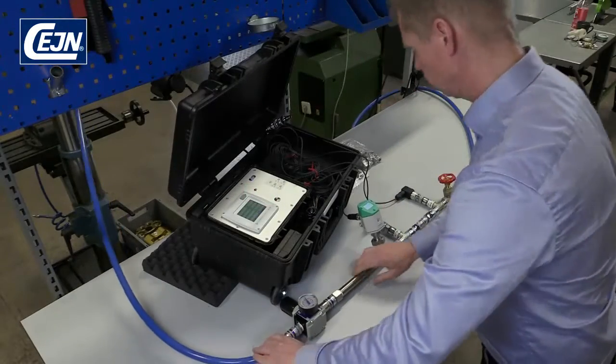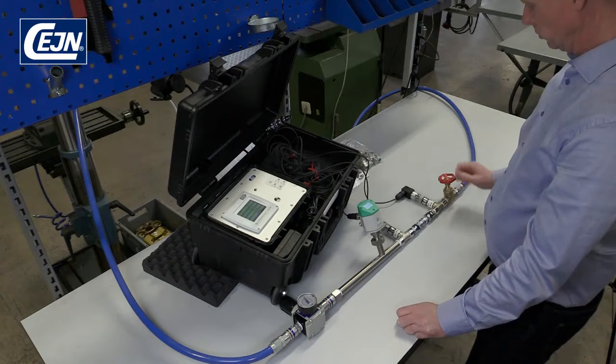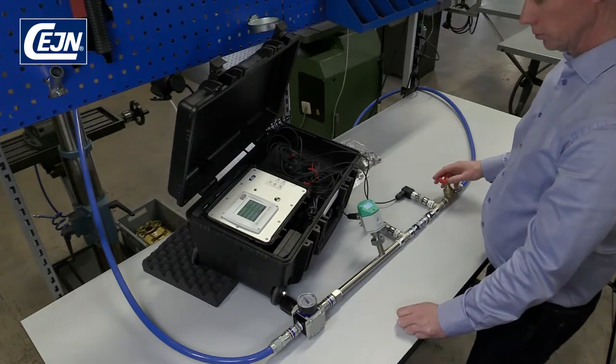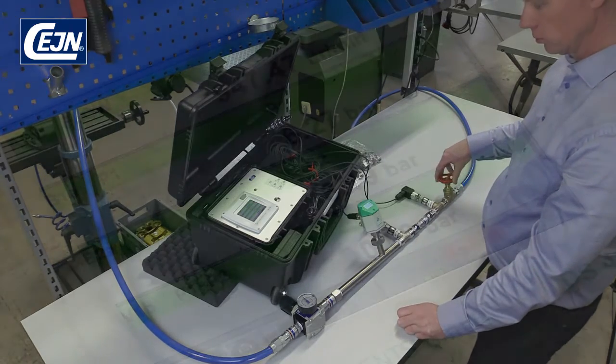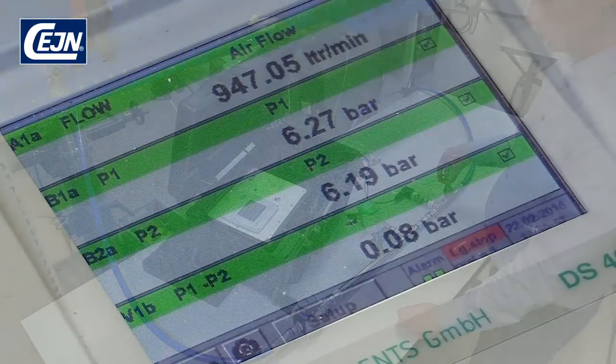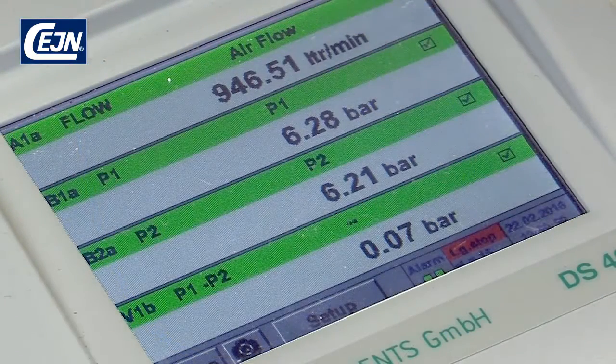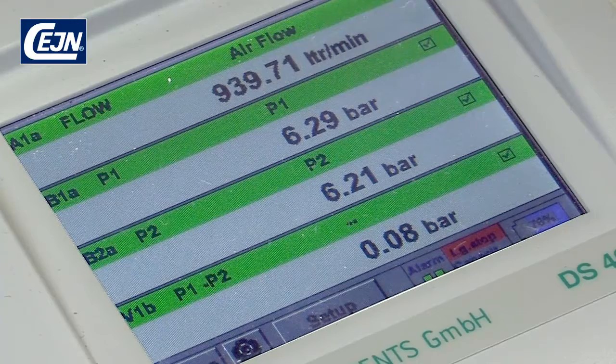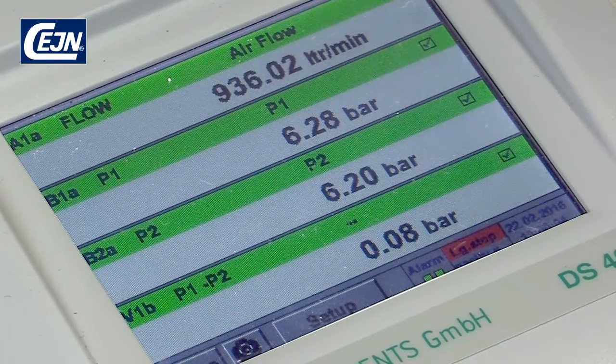When you connect the hose, check that the pressure is not over 10 bar. Normally the pressure is around 6 to 7 bar. Use the valve to adjust how many litres you want to flow through. In this case, we want it to be around 900 litres.